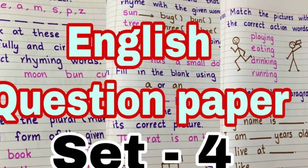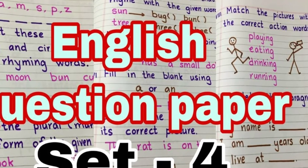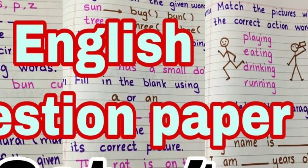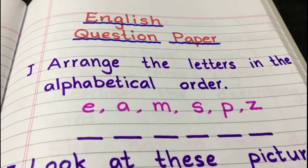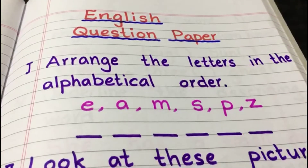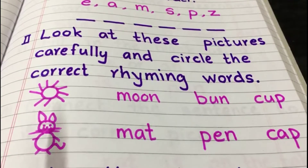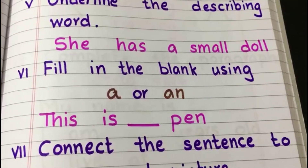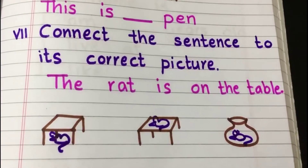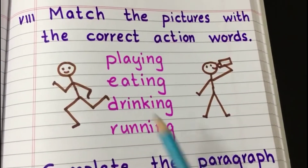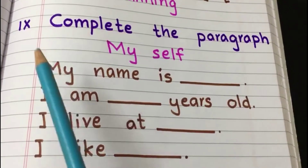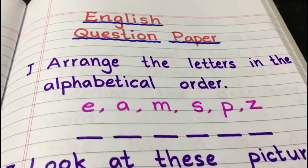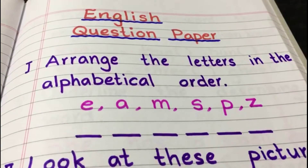Hi, this is Reena from Mrs. Reena's Kakon. This is a set of English question papers which I have prepared for my kids. I just thought of sharing it with you. I prepared this question paper from various topics like alphabet, rhyming words, singular plural, describing words, articles like a or an, preposition, verbs or action words, and the last one is paragraph writing. So without wasting time, let's look into the question paper.